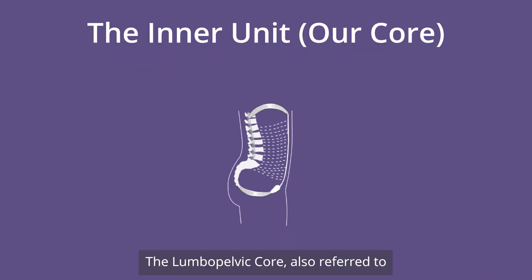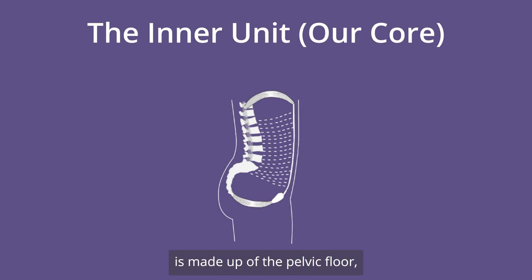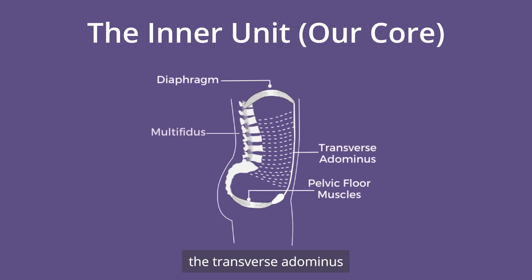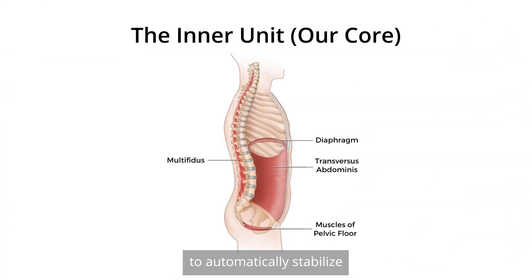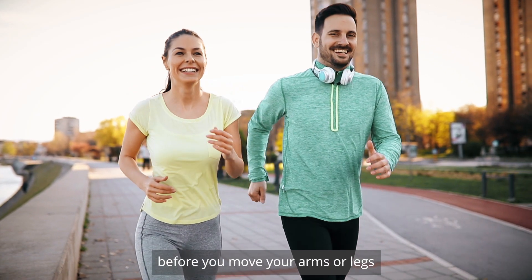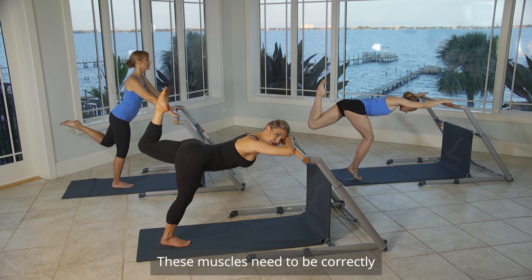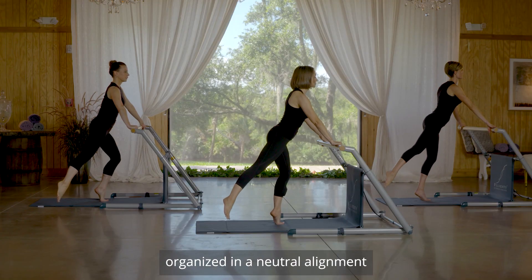The lumbopelvic core, also referred to as the inner unit, is made up of the pelvic floor, the diaphragm, the transverse abdominus, and the multifidus. These muscles are supposed to automatically stabilize the spine and pelvis before you move your arms or legs, so you don't collapse on yourself. These muscles need to be correctly organized in a neutral alignment.